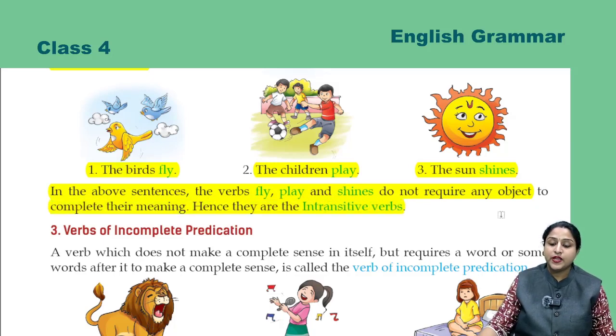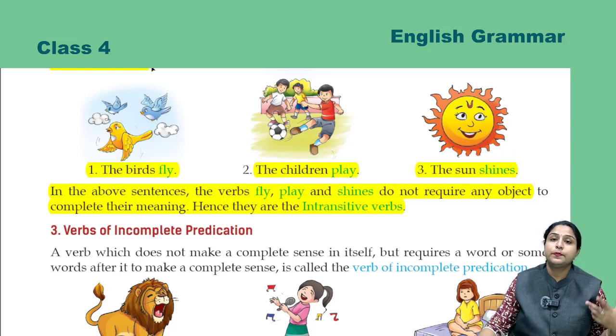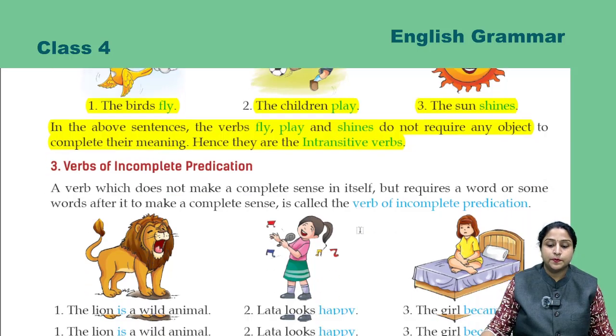So here, 'fly', 'play', and 'shines' do not need any object to complete their meaning. That is why these are intransitive verbs.